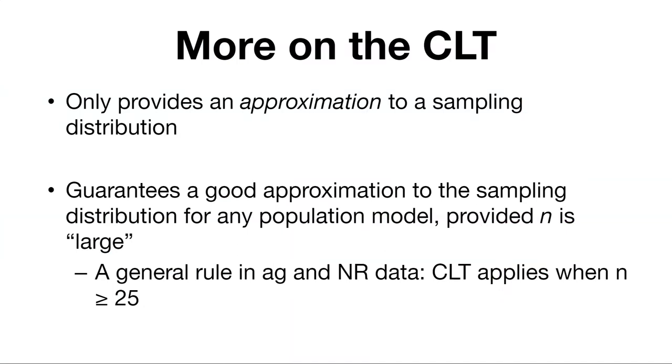More on the Central Limit Theorem. It really only provides an approximation to some sampling distribution that we're interested in, but that's usually good enough for our purposes and how we analyze data. As a general rule in agriculture and natural resources disciplines, we can apply the Central Limit Theorem when n is greater than or equal to 25. That's just a general rule of thumb.